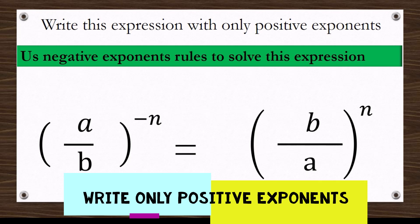So let's take a look at how we do it. Based on the rule you just saw, what we have here is 3x divided by 2y, and the whole thing to the power of minus 3. The question is asking us to make this exponent, which is minus 3, to be positive.